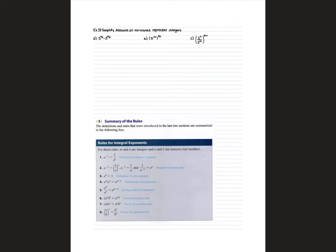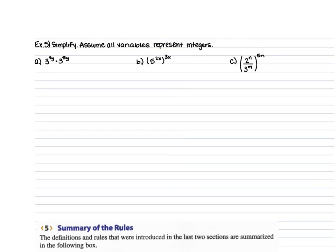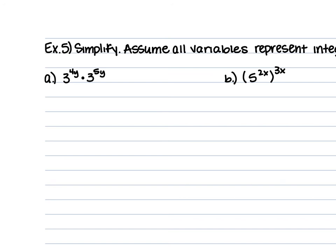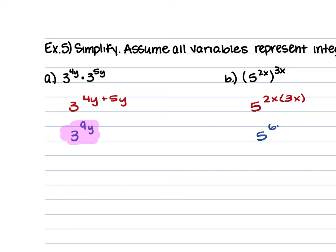For our next set, we're simplifying and assuming all variables represent integers. For example a, we have 3 to the power of 4y times 3 to the power of 5y. Since we're multiplying two bases that are the same, we keep the base and add the powers: 4y plus 5y gives us 9y, so the answer is 3 to the power of 9y. For example b, we have 5 to the power of 2x raised to the power of 3x. We have a power raised to a power, so we keep the base of 5 and multiply: 2x times 3x gives us 6x squared, so the answer is 5 to the power of 6x squared.